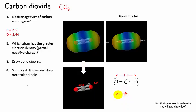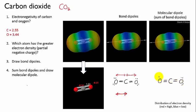So when you look at the molecular dipole of carbon dioxide, it actually has none. And if a molecule has no molecular dipole, we say it is a non-polar molecule.